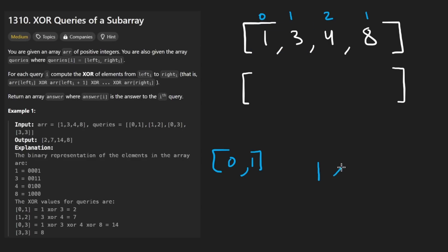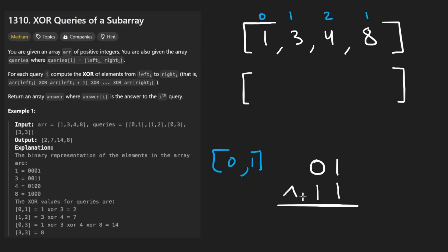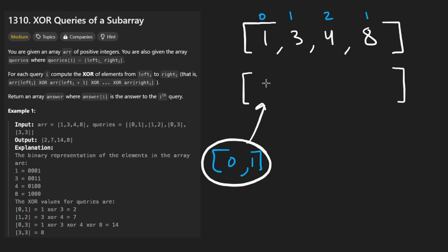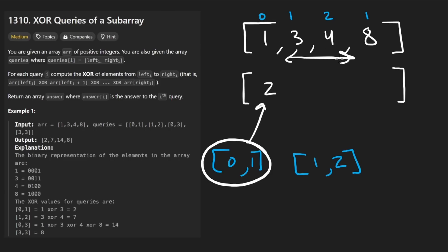If you take one and XOR it with three, the result is going to be two. The binary representation of one is 01 and three is 11. XOR works bit by bit: if they're different the output is one, if they're the same the output is zero. So the binary representation of two is the result. For the next query, one to two, XORing those values gives seven.